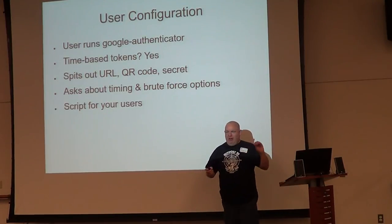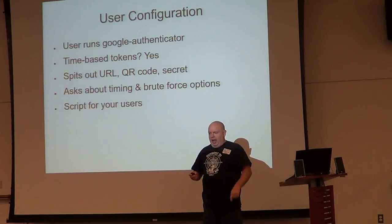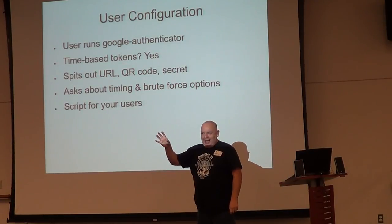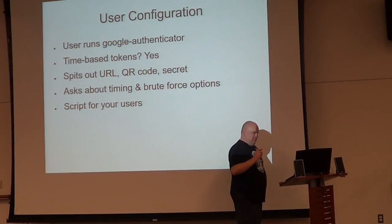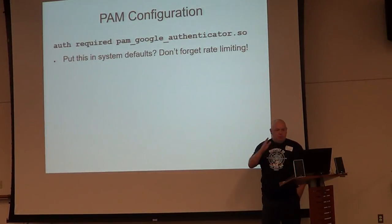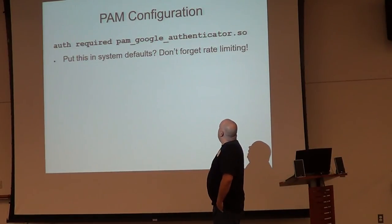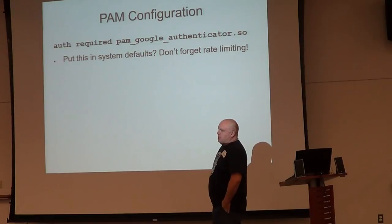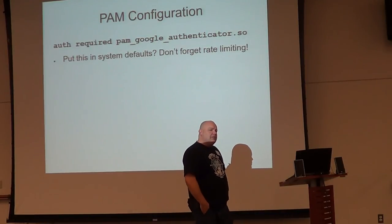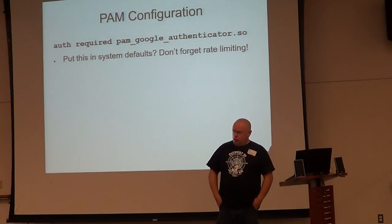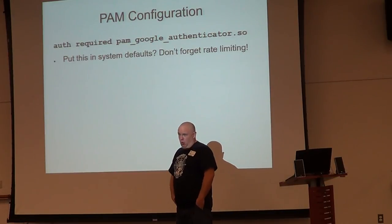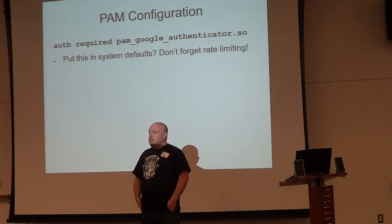If you're running a large environment, script this — it's very easy to script. You would think that a user should be able to type 'y' and use their phone to take a picture of the QR code. They can't. Script it. And then you plug it in somewhere in the system. Do you put Google Authenticator in your system defaults? Do you want it to show up in FTP requests, in SU or sudo requests, in simple login requests for the console? Think very carefully before you just say this is our default.